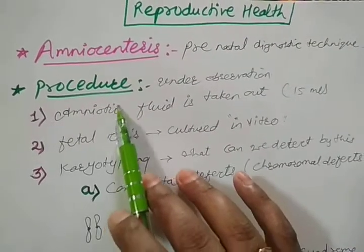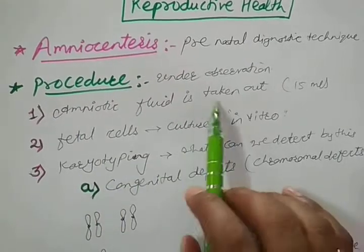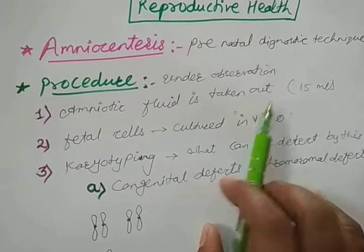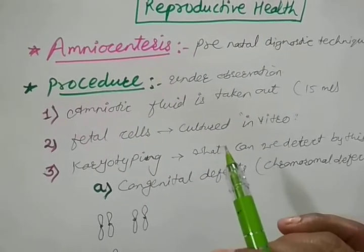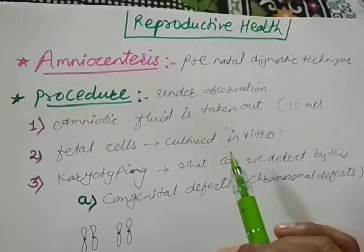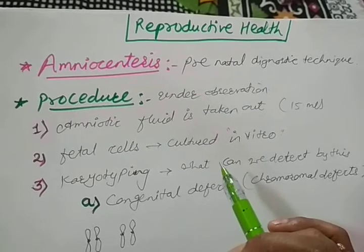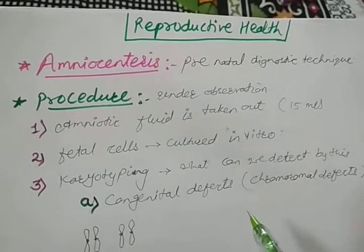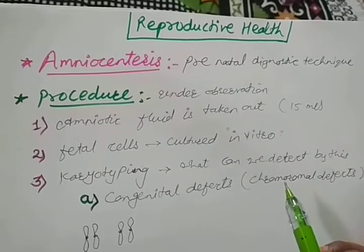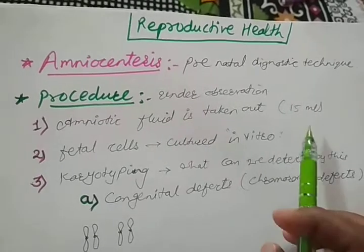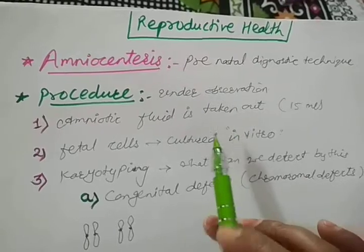The first step is that amniotic fluid is taken out. As we have seen in the structure of the embryo, the amniotic fluid protects the baby from mechanical shocks. That amniotic fluid is taken for this technique, and the quantity taken is very, very less — only approximately 50 ml or less than 50 ml, taken using small needles.